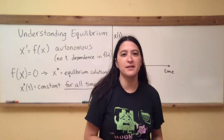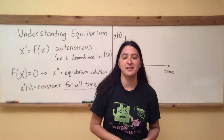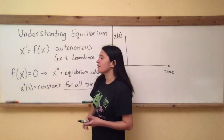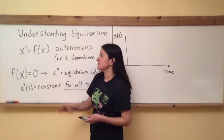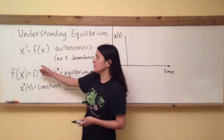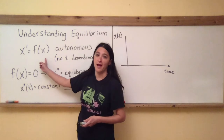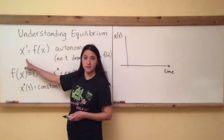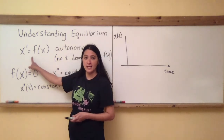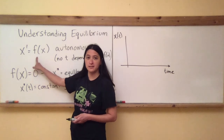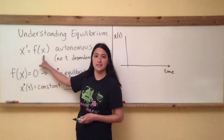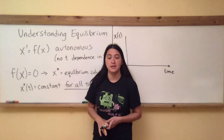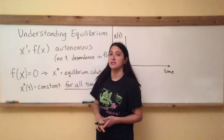Here's a quick video to help you understand equilibrium a little better. We've been talking a lot about one-dimensional state equations, which have the general form of x prime equals f of x. Notice that the rate of change in the state x is dependent on the current state itself. It does not depend on what time it is. These are known as autonomous equations.